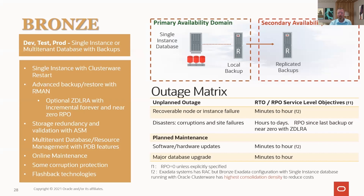Online maintenance and flashback — being able to flashback the entire database, like a rewind button, or just a single table or group of queries — this is unique to Oracle. You don't even have to recover from backup to undo a mistake where someone deleted some rows. We can accommodate that just for the table or group of tables for the transactions. For unplanned outages, if a node goes out, it's minutes to hours of recovery. A disaster — data center fire, big power outage — we might have to recover from the last backup, so we may have some data loss associated with when we took that last backup.